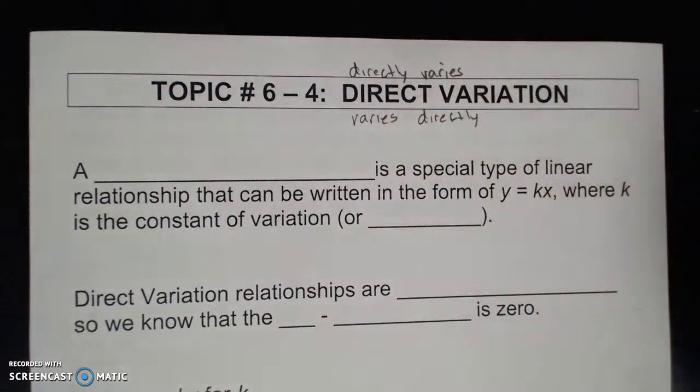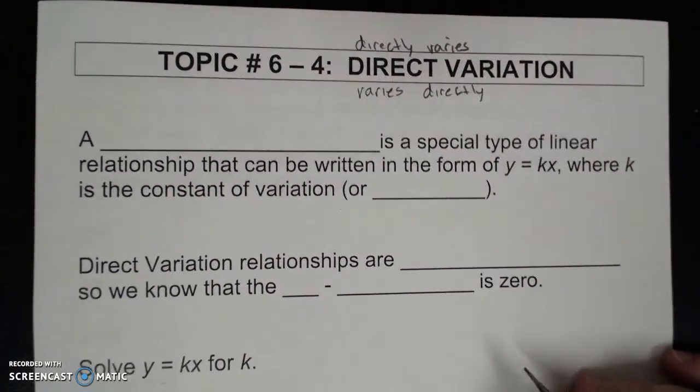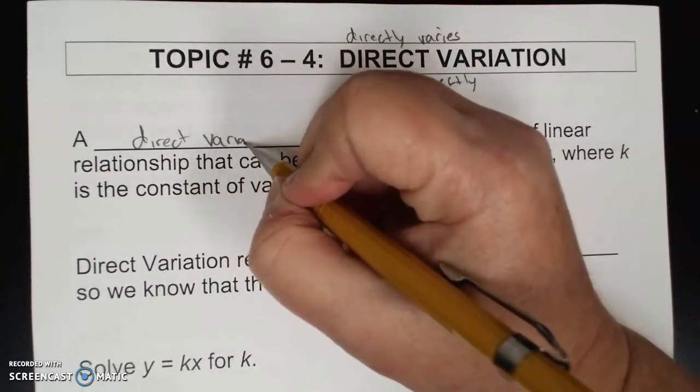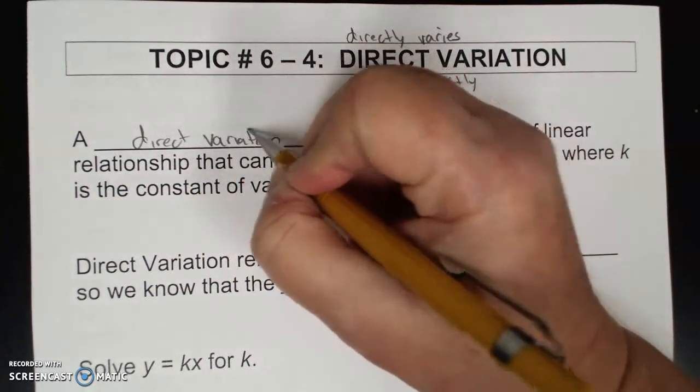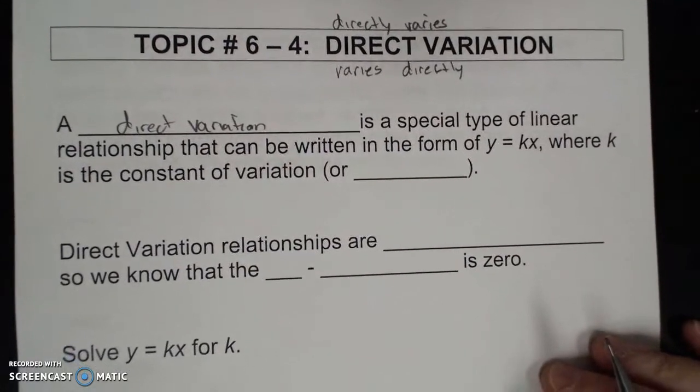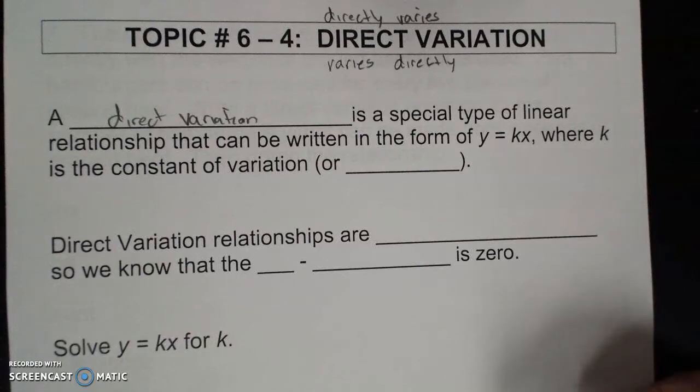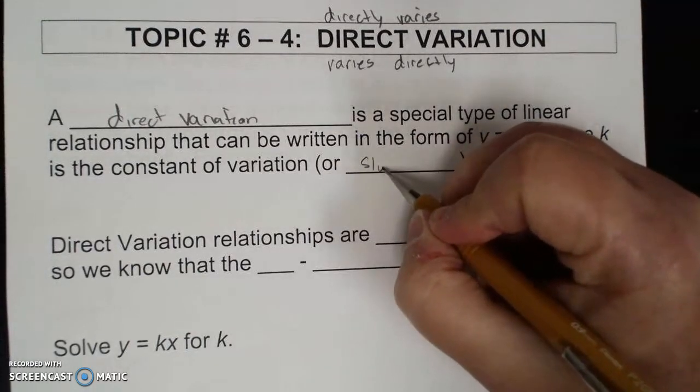You're going to run into these phrases. It's all the same thing. A direct variation is a special type of linear relationship that can be written in the form y = kx, where k is the constant of variation, or slope.